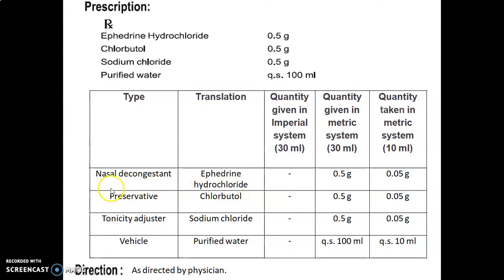Ephedrine hydrochloride used as a nasal decongestant, quantity given 0.5 gram, multiply it with factor 0.1, we will get 0.05 gram. Chlorbutol used as a preservative, 0.5 gram, multiply it with factor, we will get 0.05 gram.